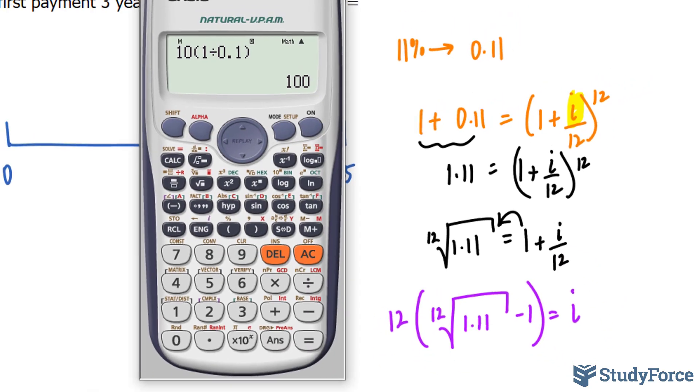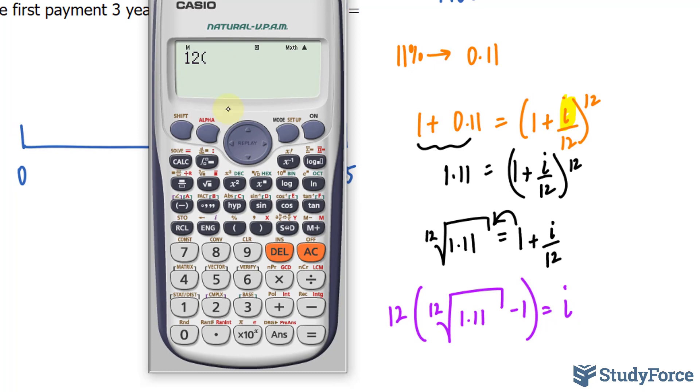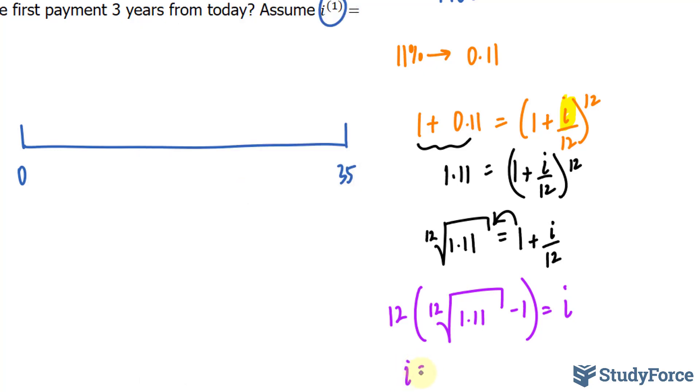Now we can put this into our calculator. 12 times the 12th root of that number, minus 1. And our new interest rate, which we'll be using moving forward, is 0.104815.